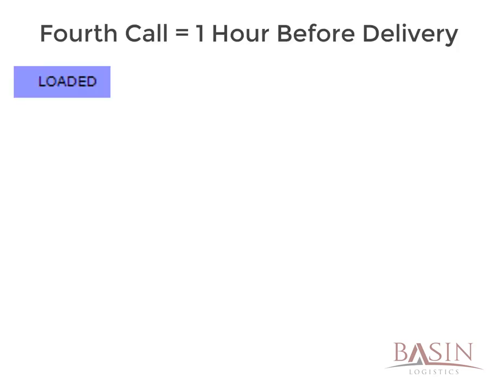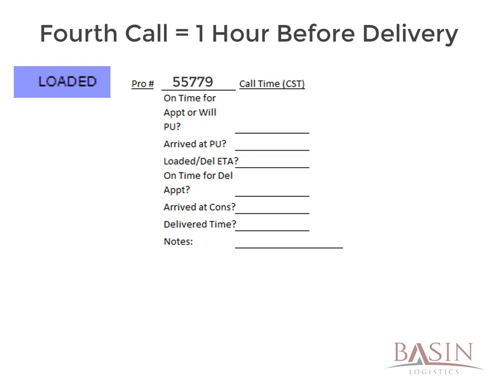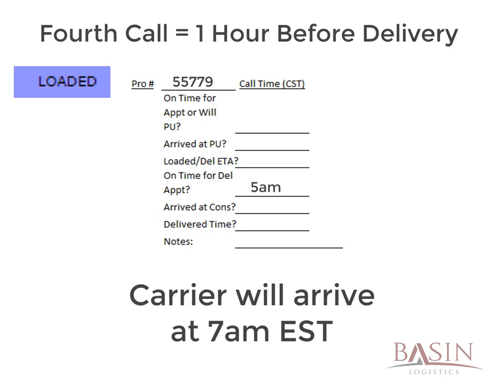The next check call will be made to the carrier one hour in advance of the delivery. Based on the example, you should call Jim at 5 o'clock AM Central Standard Time to confirm that he will either be at the scheduled appointment time or that he has arrived early and is waiting to be unloaded. Following the example, Jim has told you that he will be arriving at the consignee at 7 o'clock Eastern Standard Time. Because this is not a step a load takes during the process, there is no updating of critical load information. This is just a step taken to ensure there are no unexpected delays and that the driver will be on time to the delivery.